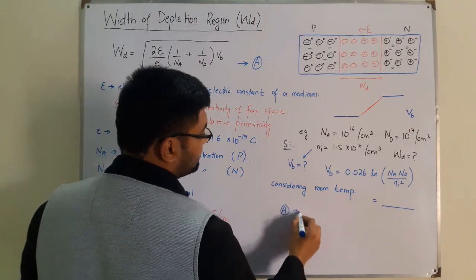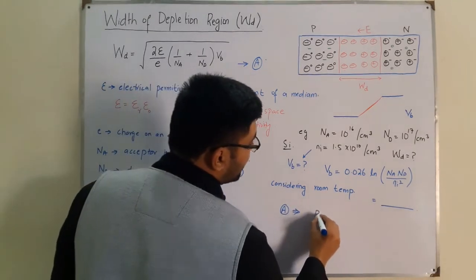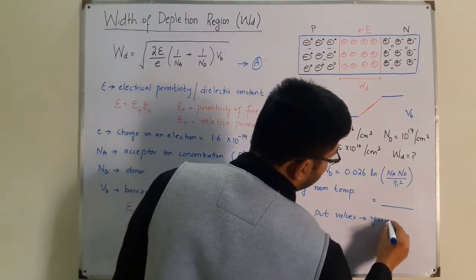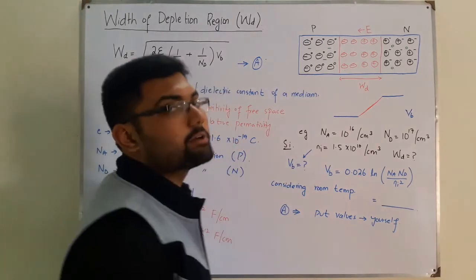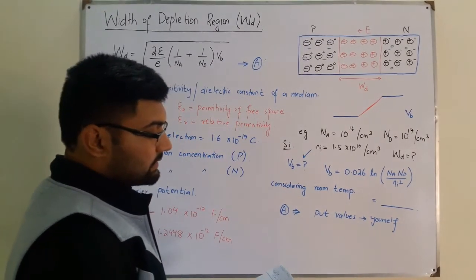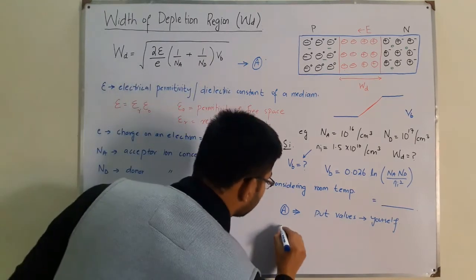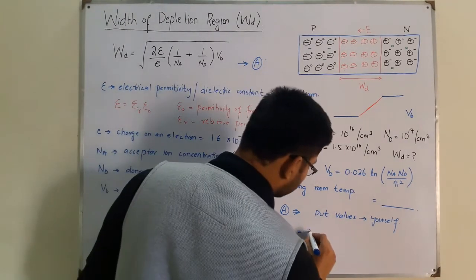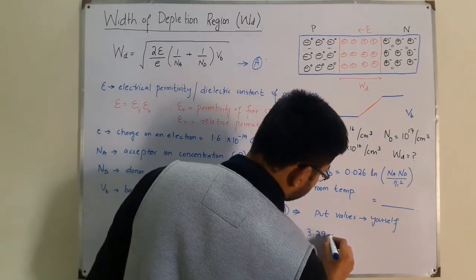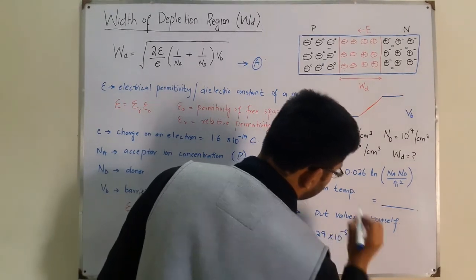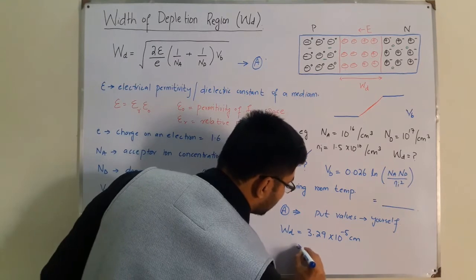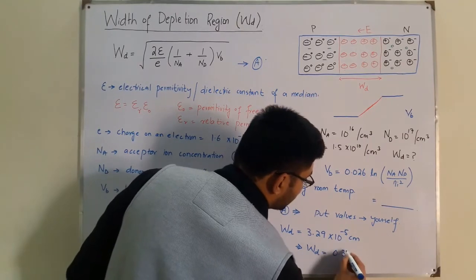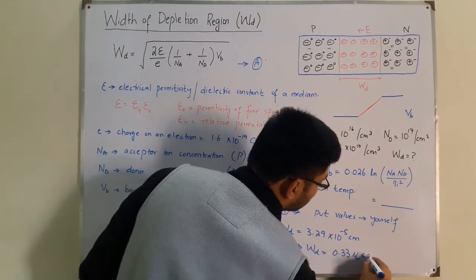I'm telling you the final answer because I only know the final answer. The WD equals 3.29 into 10 raised to the power negative 5 centimeter, which I could write as 0.33 micrometer. This much small is the width of the depletion region.